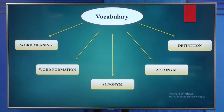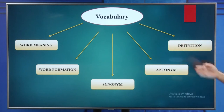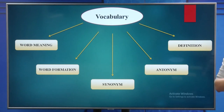In the vocabulary part, we will focus on five different categories. The first one is word meaning. The second is word formation. The next one is synonym. The fourth is antonym. And the last one is definition. Is that clear? Let's get started.